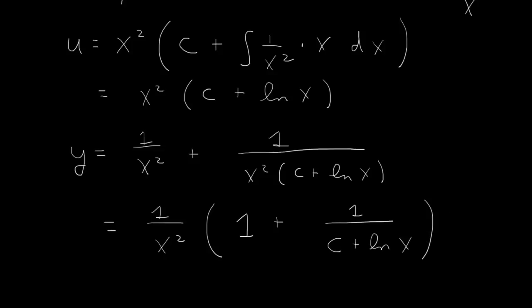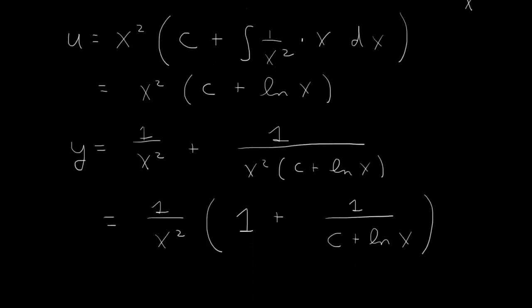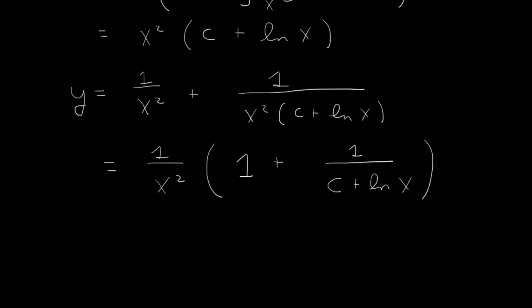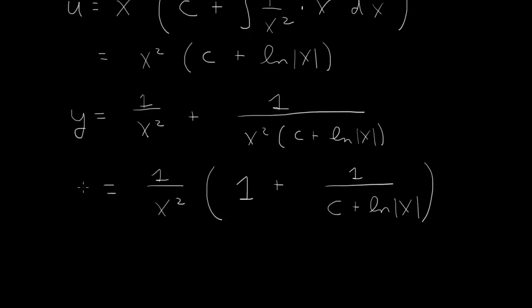Here I'm assuming x is positive. If you wanted x to be both negative and positive, then when we do this integral for log, technically we would need an absolute value, giving log of the absolute value of x throughout. So that will be our solution, and c can be determined from whatever initial value you have for y.